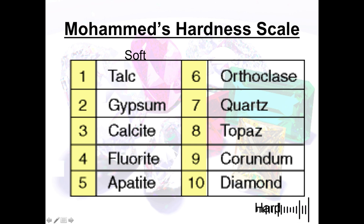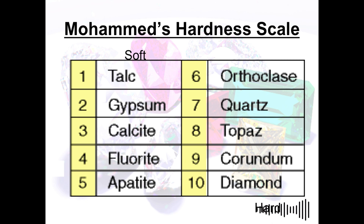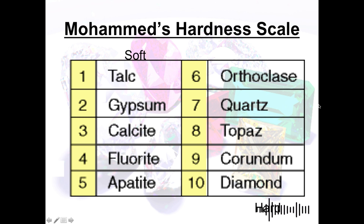Next is orthoclase, also known as orthoclase feldspar, rated 6 on the Mohs scale. It is technically used for manufacturing glass and ceramics such as porcelain.